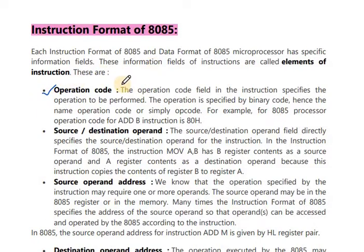What is an operation code? The operation code field in instruction specifies the operation to be performed. The operation is specified by binary code, hence the name opcode. Operation code is simply opcode. For example, in 8085 processor, the opcode for ADD B instruction is 80H. H is hexadecimal.